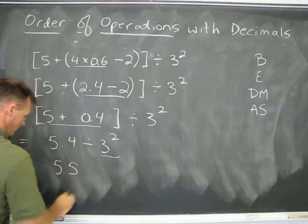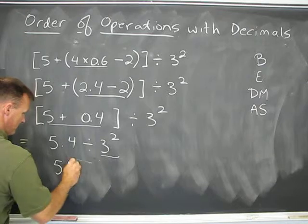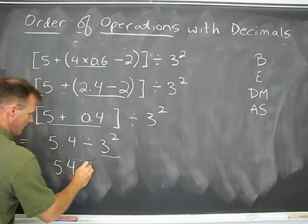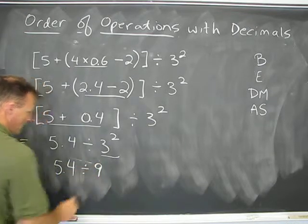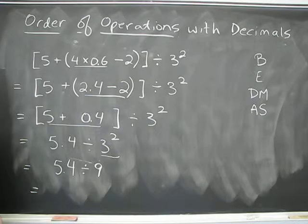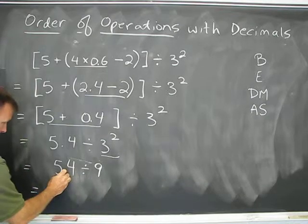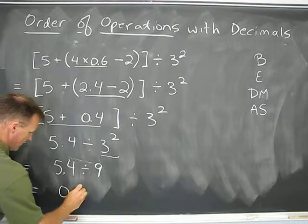So I'm going to be doing 5.4 divided by 9, which at the end of it all, what is that? 0.6. That's 0.6 for my final answer.